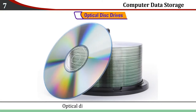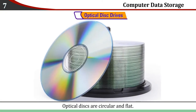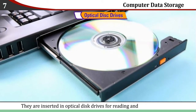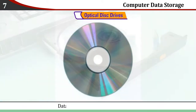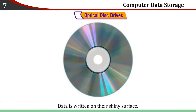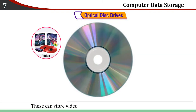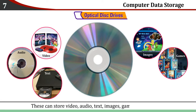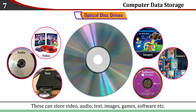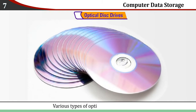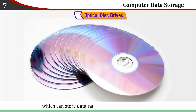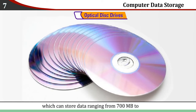Optical Disk Drives: Optical disks are circular and flat. They are inserted in optical disk drives for reading and writing data. Data is written on their shiny surface. These can store video, audio, text, images, games, software, etc. Various types of optical disks are available which can store data ranging from 700 MB to 25 GB.